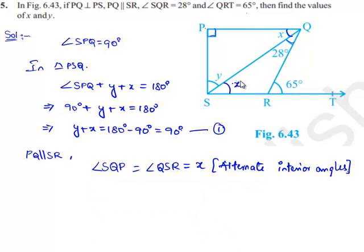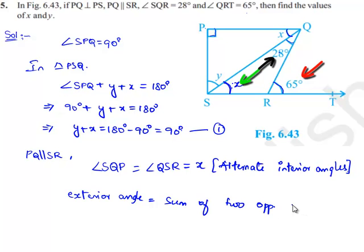To find the value of X, we know that X and 28 degrees are opposite interior angles to exterior angle QRT. An exterior angle equals the sum of two opposite interior angles.